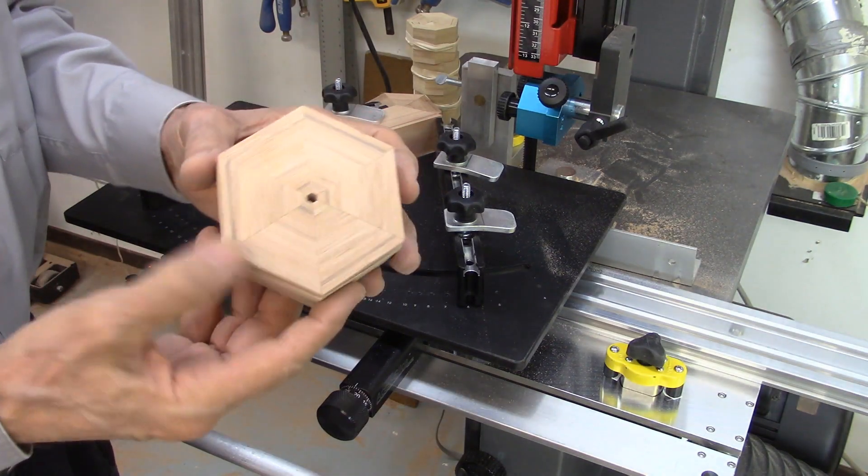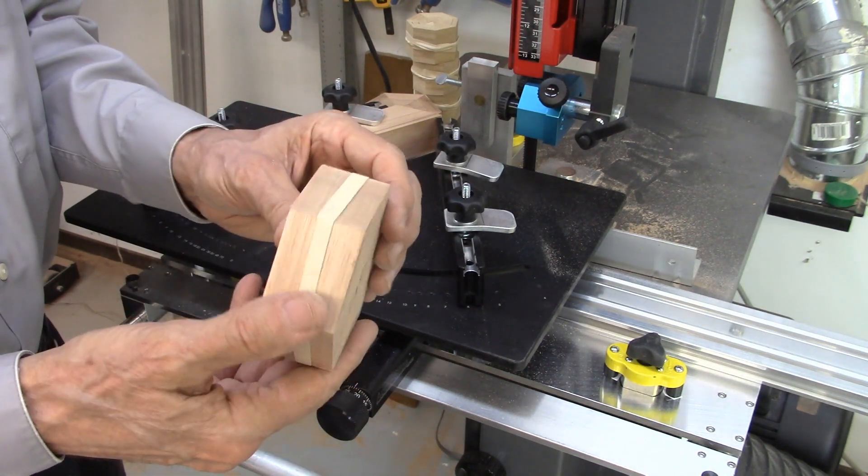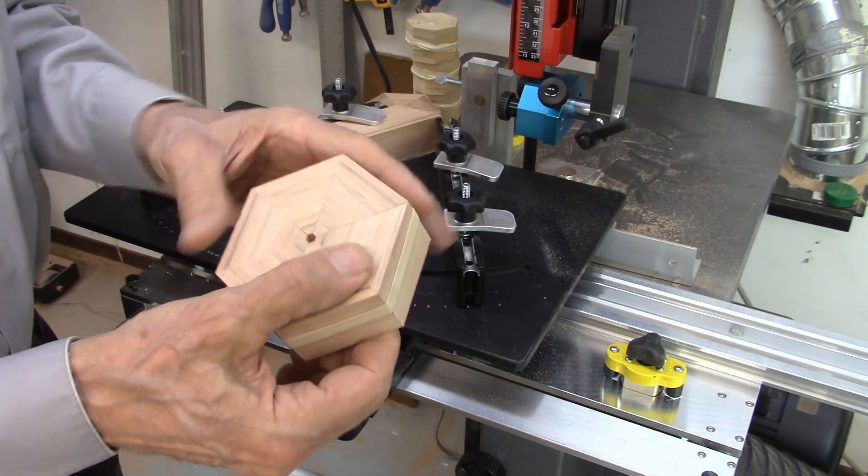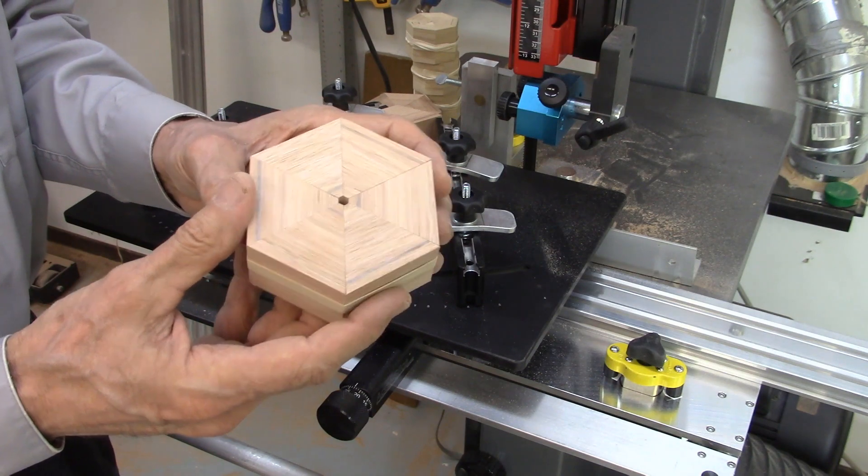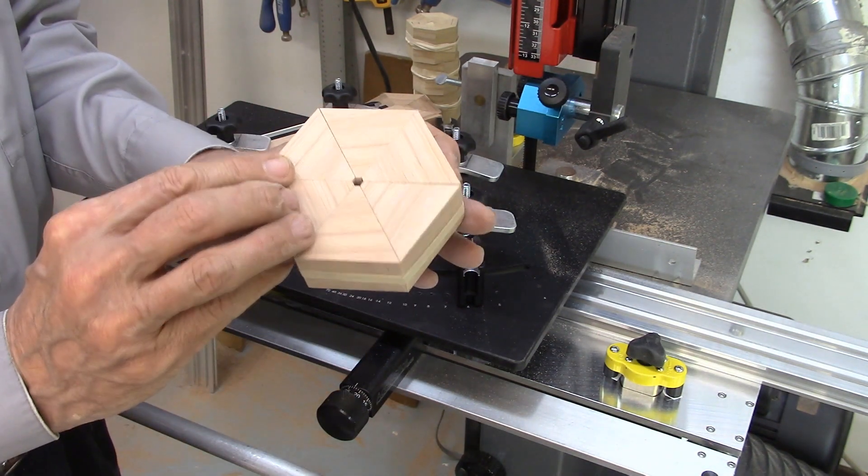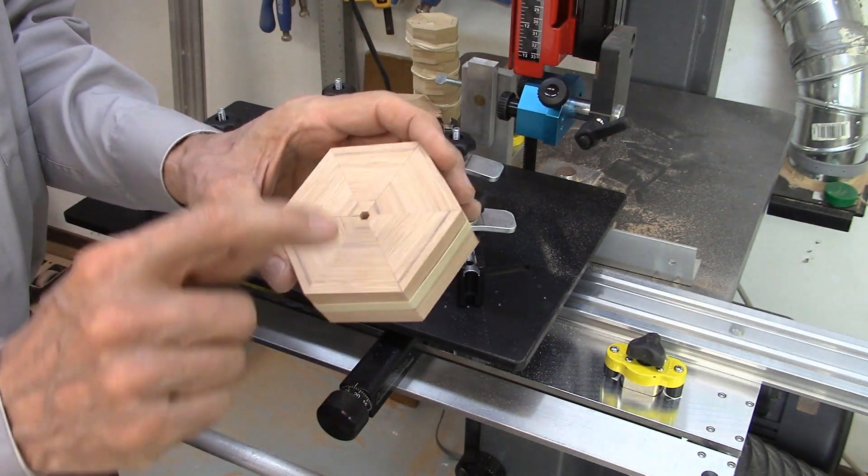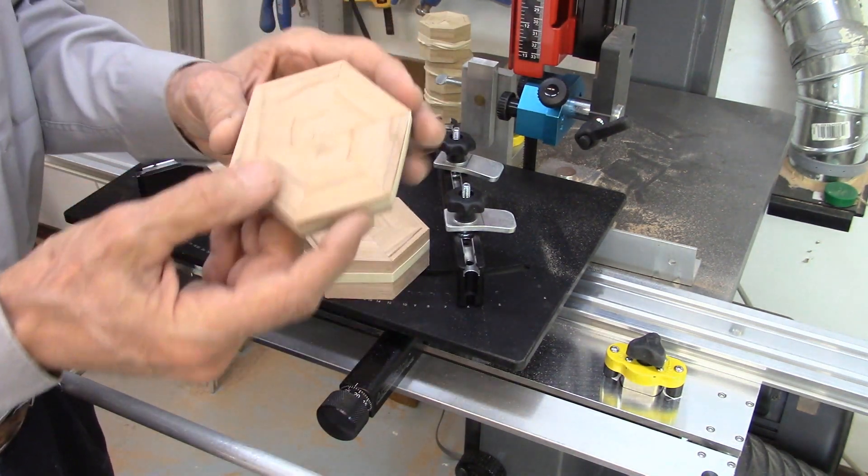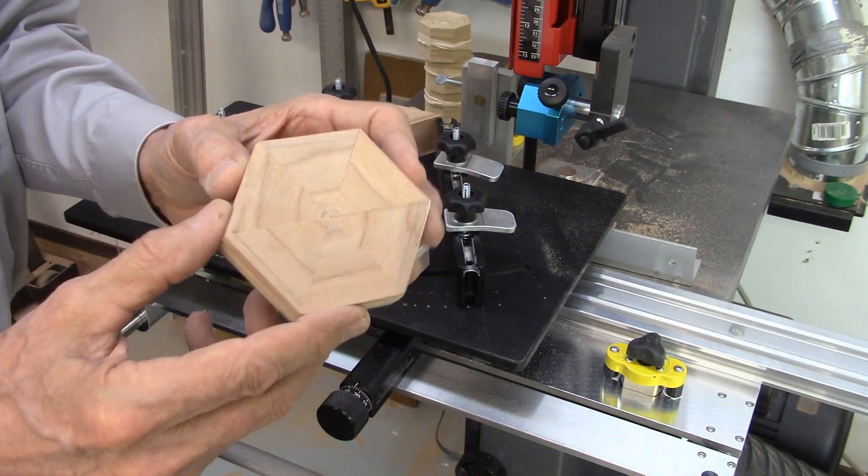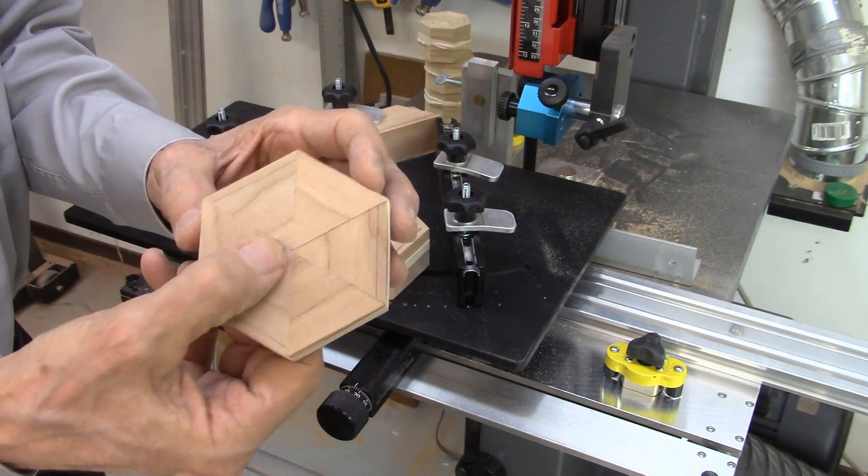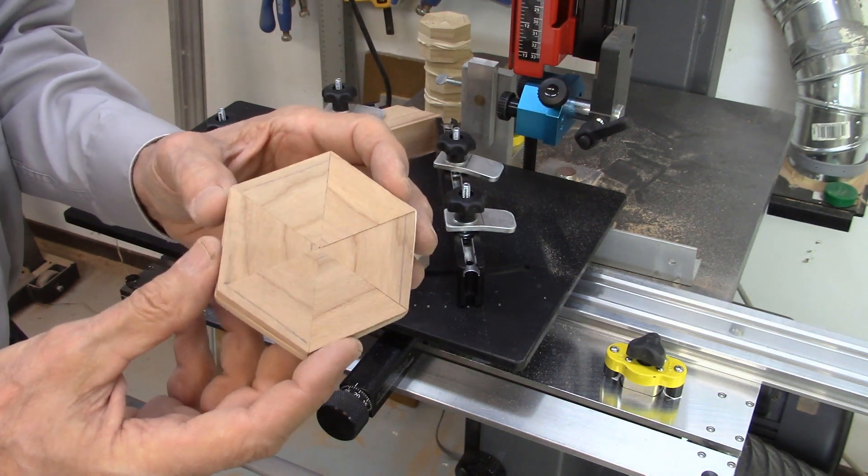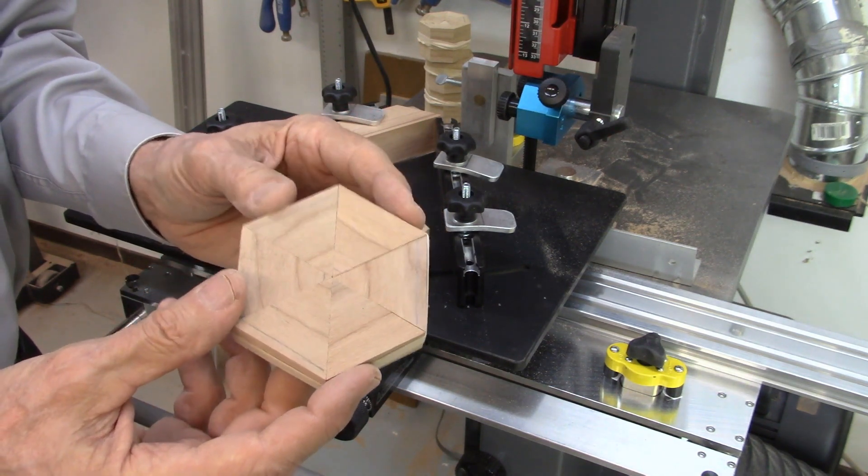And there we have our finished assembled segments. I put a rubber band around it just to hold them together. But the joints are perfectly aligned on both sides. Small hole in the center. Earlier I did another sample with no hole in the center, perfectly meeting in the center. This is something that would be near impossible to do on a table saw.